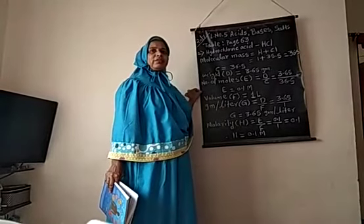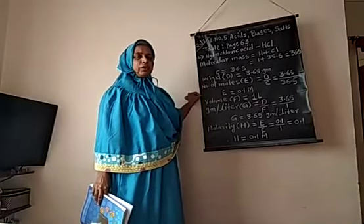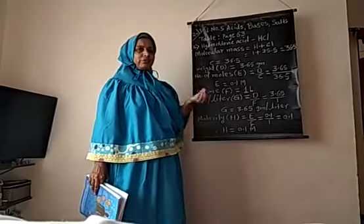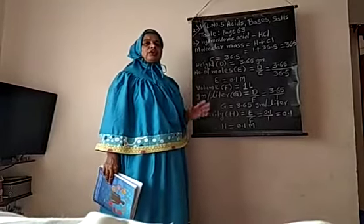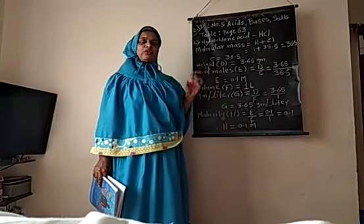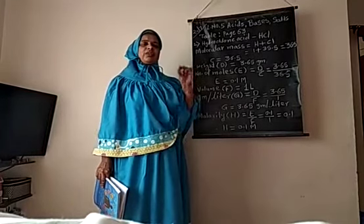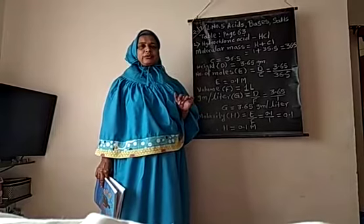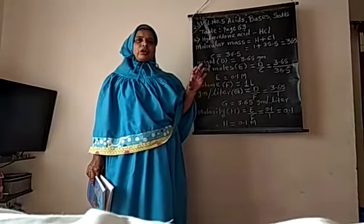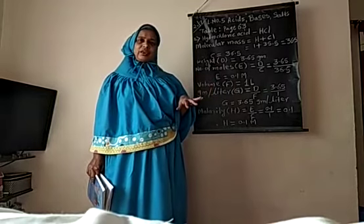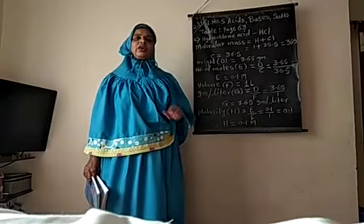Last period I explained the meaning of concentrated acid, concentrated base, dilute acid, and dilute base. Let's revise: concentrated acid is one in which solute is more and solvent is less. Dilute acid has less solute and more solvent. Similarly for bases, if solute is more and solvent is less, the base is concentrated; if solute is less and solvent is more, the base is dilute.